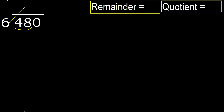6 multiplied by which number is nearest to 48 but not greater? 6 multiplied by 9 is greater, so 6 multiplied by 8 — 48 is not greater.